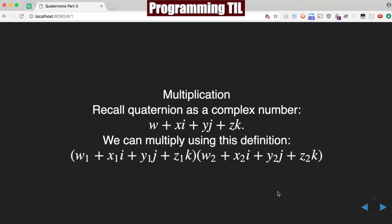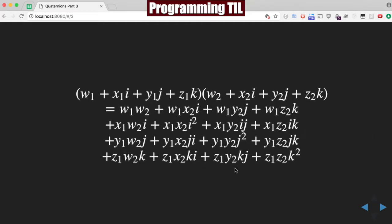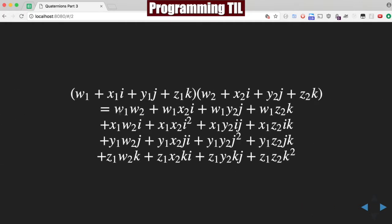Recall quaternions can be used as a complex number, so W plus XI plus YJ plus ZK. We can multiply using this definition, so that times itself, but with W1s, X1s, Y1, Z1, and then sub 2s, so two different numbers here. Multiplying this out, and this is only a portion of the entire product here. I have listed it all out, but I suggest going on GitHub and looking at it if you want to see it easier, or pause the video if you really want to look at all the numbers, but basically this is just simple multiplication.